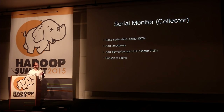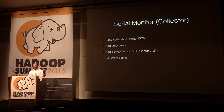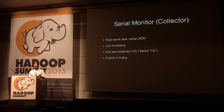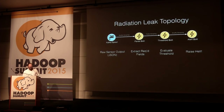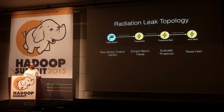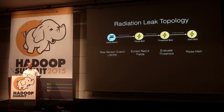The serial monitor component running on my laptop reads the data coming off the Arduino, adds a timestamp, adds a unique identifier for the device — in this case Sector 7G so we know where the sensor is — and publishes it to Kafka. This is what the radiation leak topology looks like: raw sensor data comes out of Kafka as JSON, a parse bolt extracts the required fields, a threshold bolt evaluates whether values have passed above a threshold and when they return below it, and then an alert bolt raises an alarm — in this case, tweeting it.